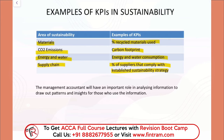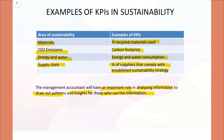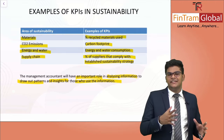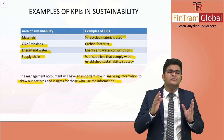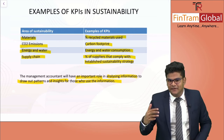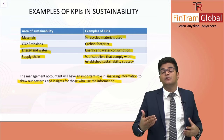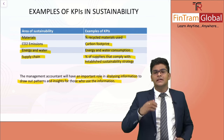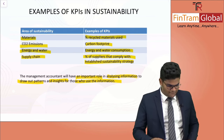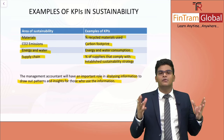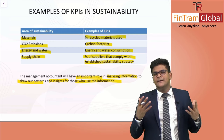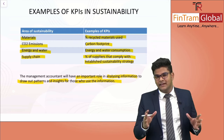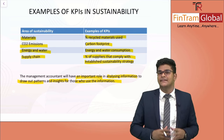The management accountant will have an important role in analyzing information to draw out patterns and insights for those who use the information. The management accountant's role is not just constrained to setting KPIs — they're also going to measure these KPIs. So they set the KPIs, measure them, and then control the performance using these KPIs. That's another function management accountants have in relation to sustainability and overall for the entire organization as well, since they set KPIs for profitability and various other aspects too.